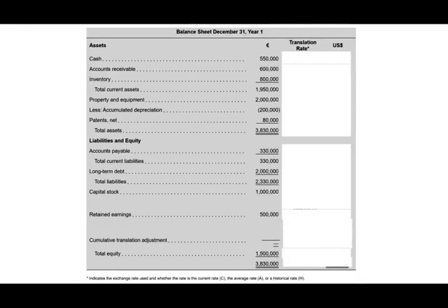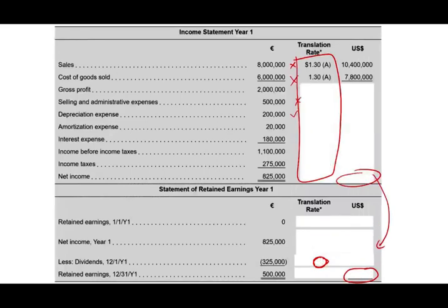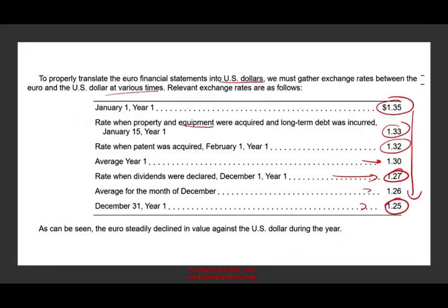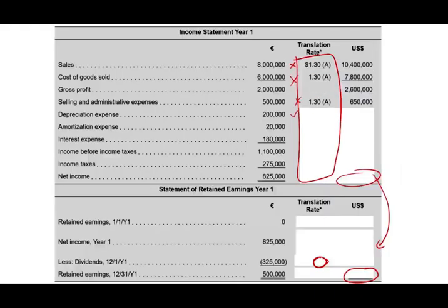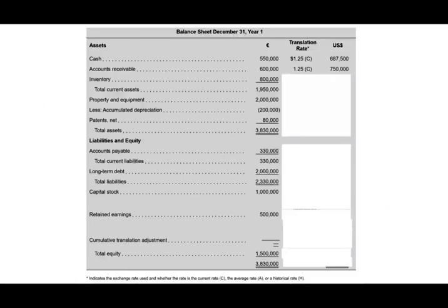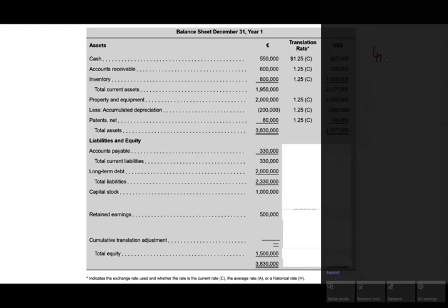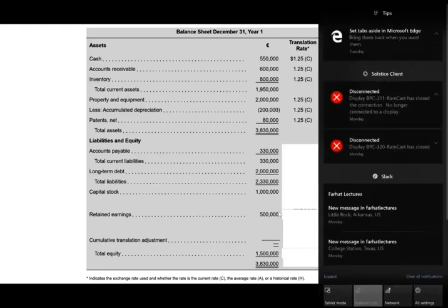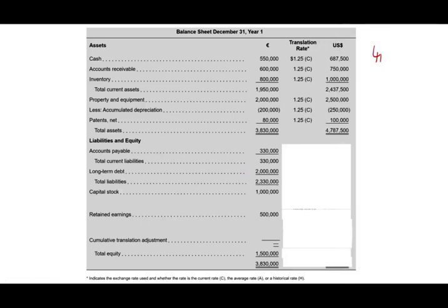On the balance sheet, we use the current rate — December 31st — which is $1.25. Cash times the current rate, receivables times the current rate, and so on for all assets and liabilities. Total assets translate to $4,787,500. We apply the same current rate to liabilities — accounts payable and long-term note — giving total liabilities of $2,912,500.